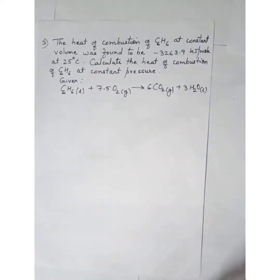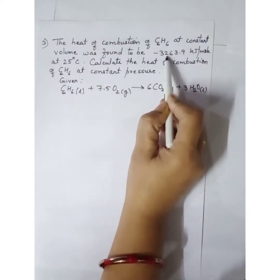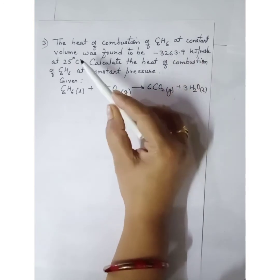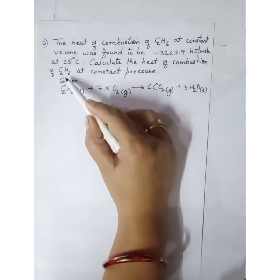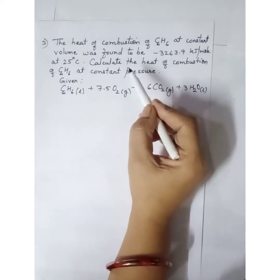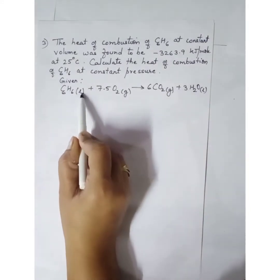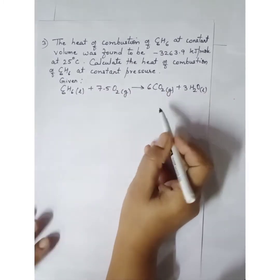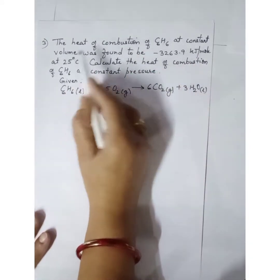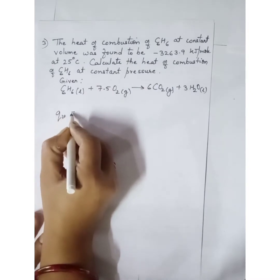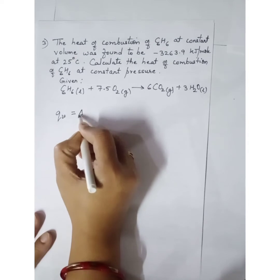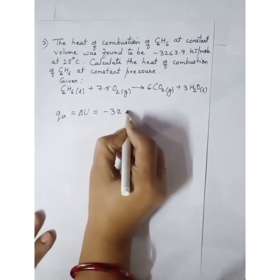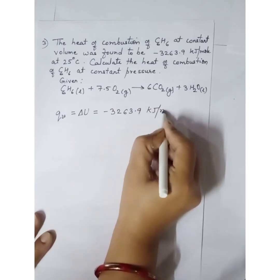Third numerical: The heat of combustion of benzene at constant volume was found to be minus 3,263.9 kilojoule per mole at 25 degree Celsius. Calculate the heat of combustion of C6H6 at constant pressure. The equation is: C6H6 (liquid) plus 7.5 O2 (gas) gives 6 CO2 (gas) plus 3 H2O (liquid). Heat of combustion at constant volume means Q_V, which equals delta U — minus 3,263.9 kilojoule per mole.